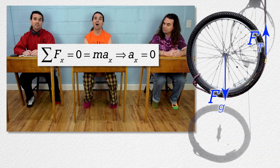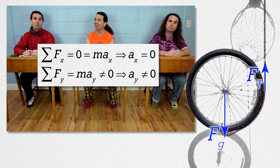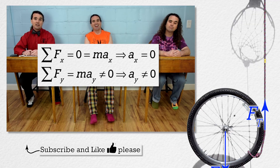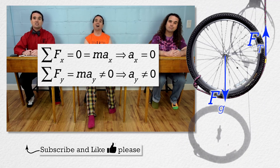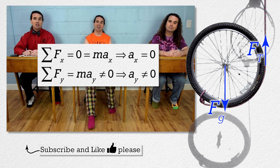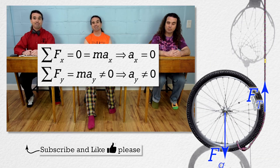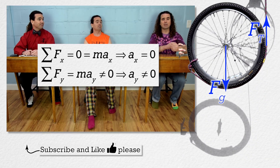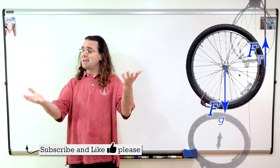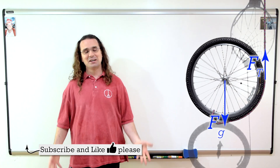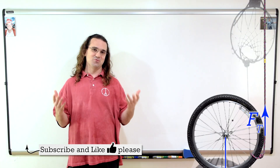There is a net force in the y direction, so the wheel accelerates in the y direction only. It does not accelerate to the left or to the right. Therefore, it does not move to the left or to the right as it descends. I'll draw more free body diagrams. Good, Bo, that will make me happy. Thank you very much for learning with me today. I enjoyed learning with you.